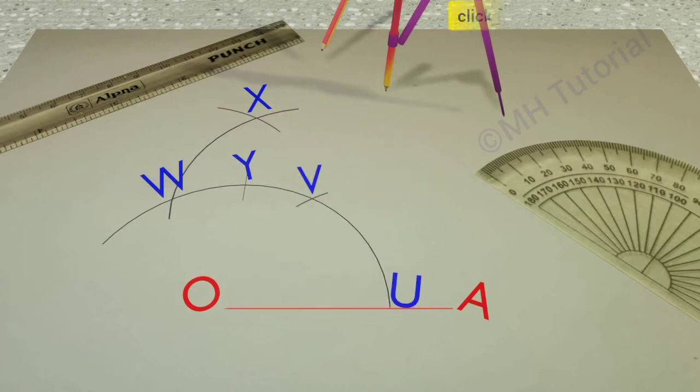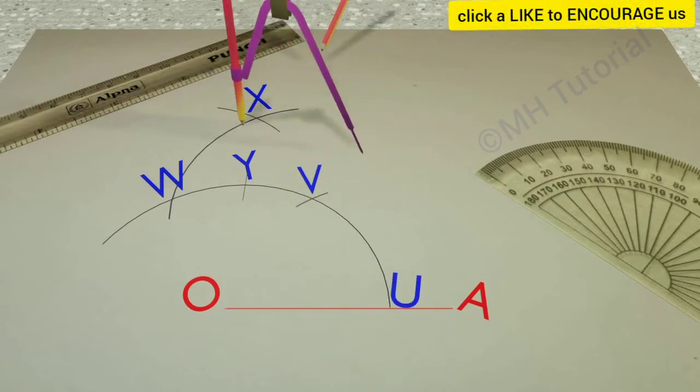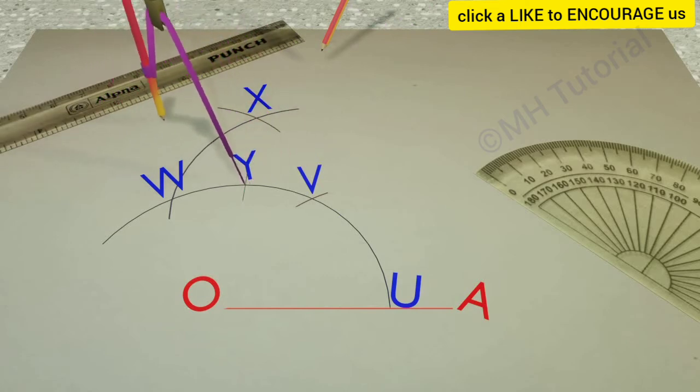We are now going to bisect the angle VOY. We shall divide the angle VOY into two equal parts.